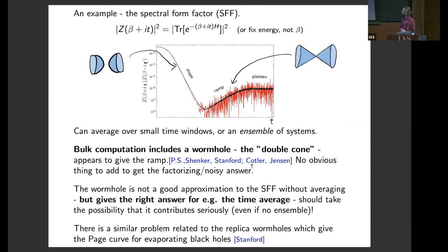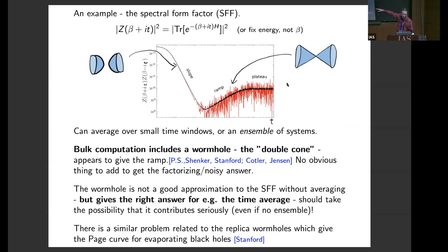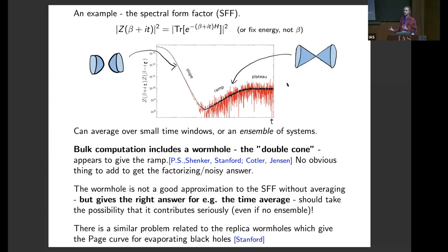And then you square, take the modulus. This red curve is the spectral form factor for a single instance of the SYK model. So at sufficiently long times, the spectral form factor becomes very small, exponentially small in the entropy and oscillates erratically, randomly around an average linear ramp in time. In order to reveal this ramp, you can average over small time windows to get rid of the noise, or you can average over an ensemble of systems like in the SYK model.